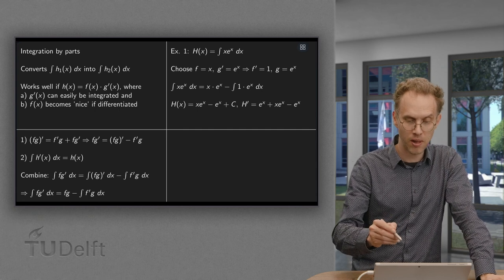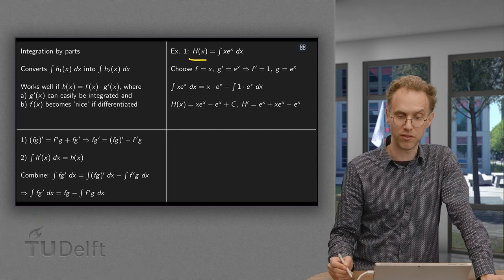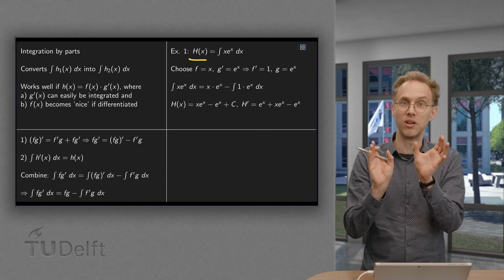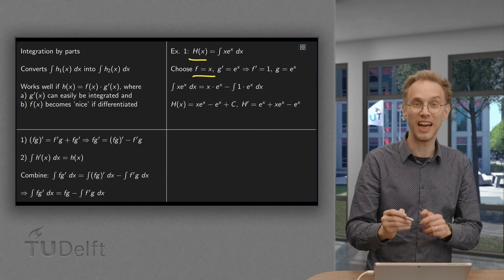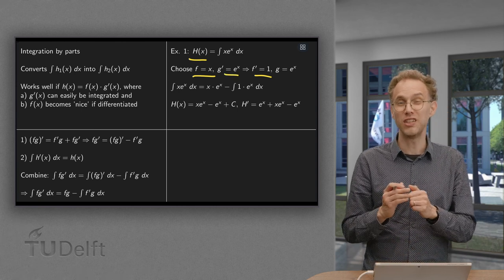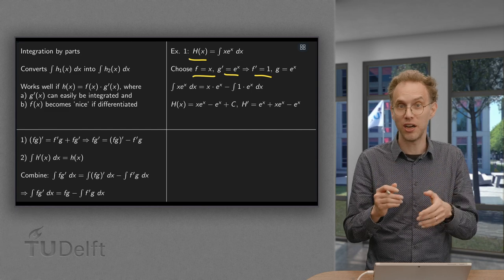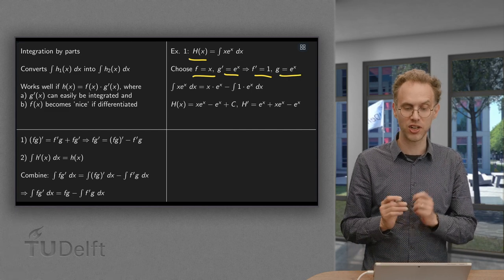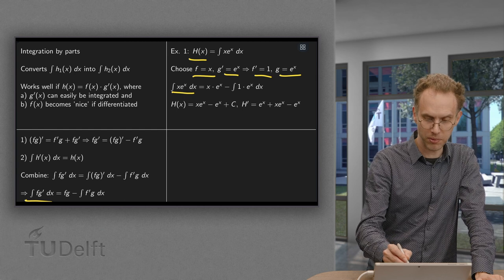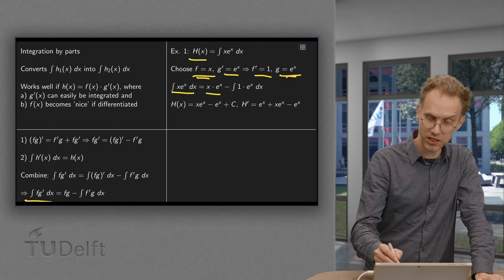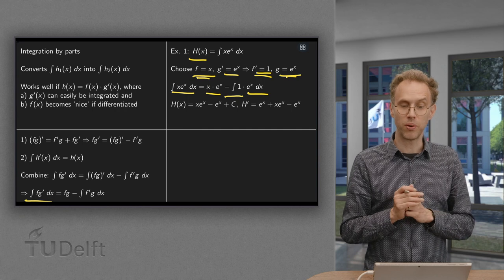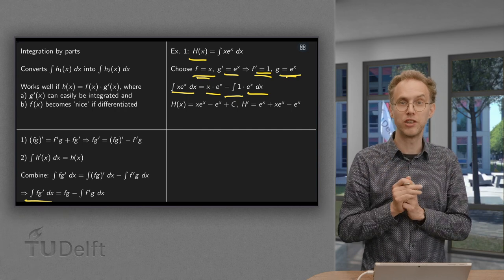We compute the antiderivative H(x) of x times e to the power x. That is the product of the functions x and e to the power x. We choose f equals x, because it becomes nicer if we differentiate — it becomes one. And g prime equals e to the power x, whose antiderivative g is also e to the power x, which is easy to compute. Applying the rule: the integral of f times g prime becomes f times g, which is x times e to the power x, minus the integral of f prime times g, which is one times e to the power x.